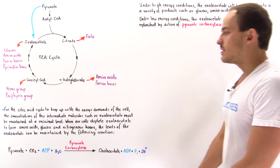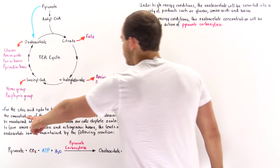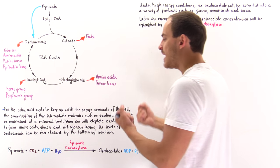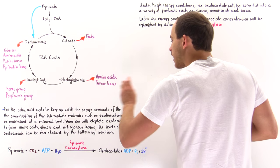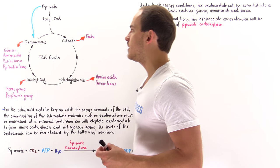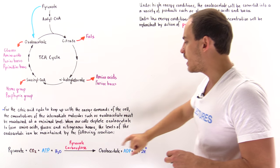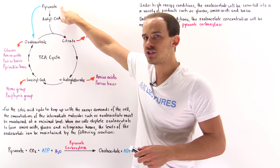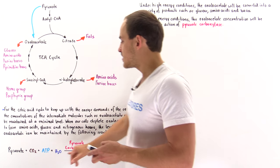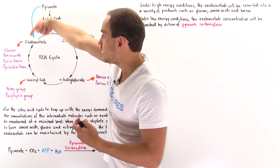For the citric acid cycle to keep up with the energy demands of the cell and the demands of producing all these biological building blocks, the concentrations of intermediate molecules within the TCA cycle must be regulated — we must maintain a minimal level of those intermediates. When cells deplete the concentration of oxaloacetate by producing building blocks, we replenish it via pyruvate carboxylase, which attaches CO2 onto pyruvate to form the four-carbon oxaloacetate, hydrolyzing ATP to drive this synthesis.